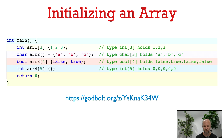You can have an equal sign between the array name and the list of values, or not. If we don't provide a size, then it can be inferred from the number of elements in the initializer list. If we do put a size and the number of elements of the initializer list is smaller than that size, then the remaining elements are going to be zero-initialized when we're using built-in numeric types like in all of these examples.